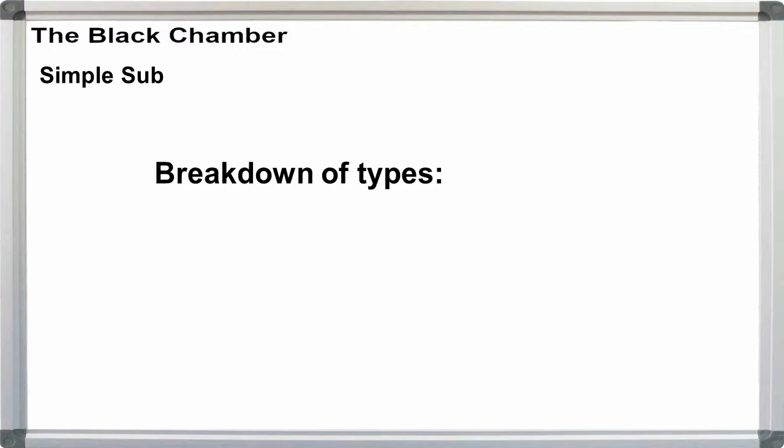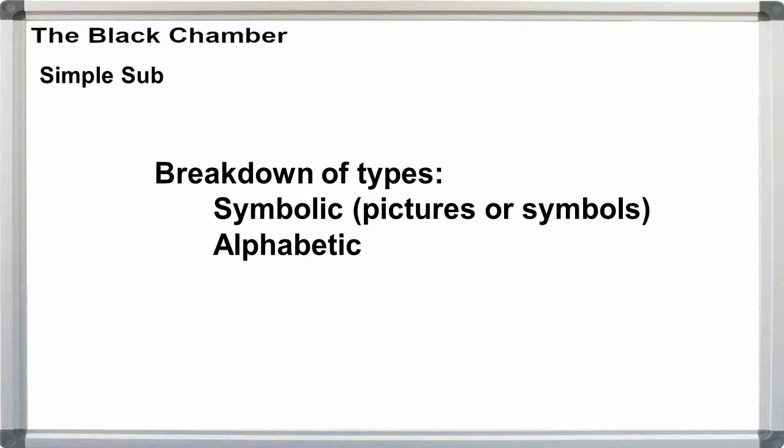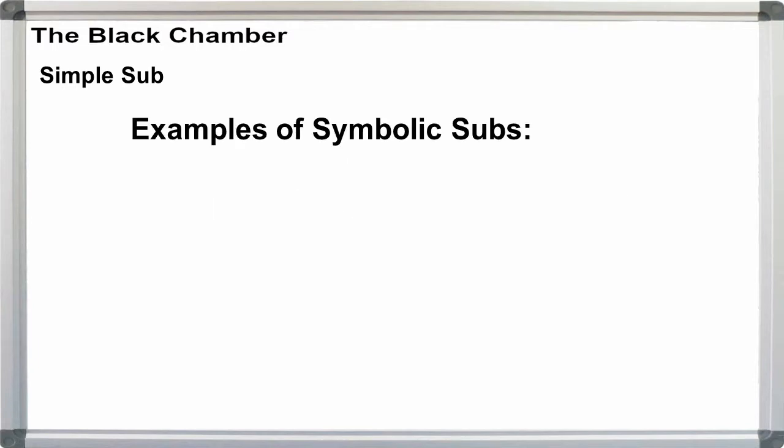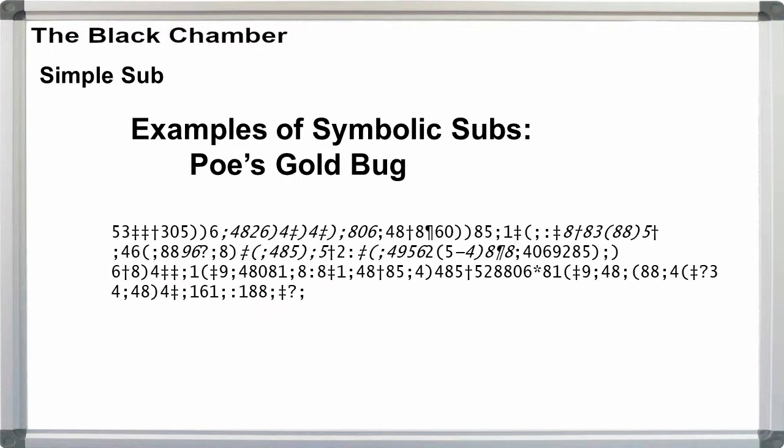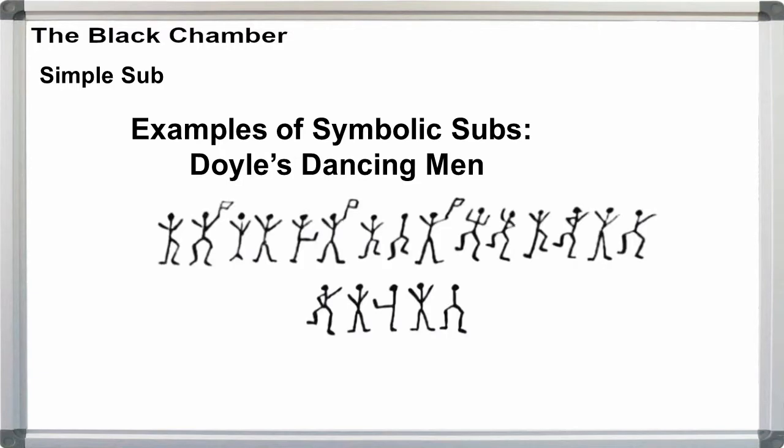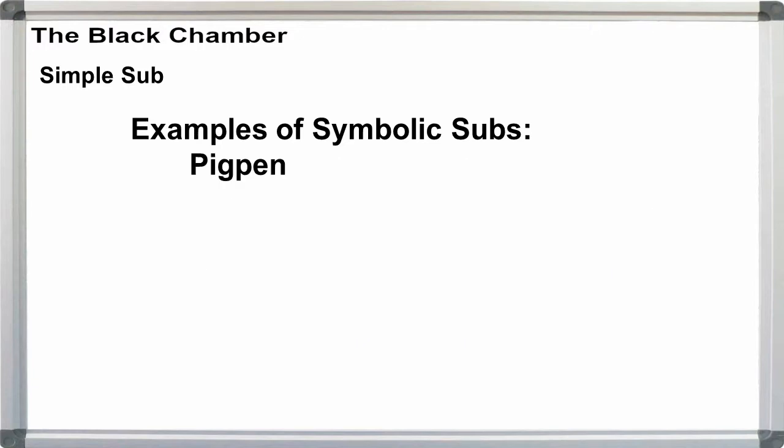As mentioned in the intro, we can treat simple substitution ciphers as symbolic, that is using pictures or symbols to represent the letters of our plain text, or alphabetic, where each letter is replaced by some other letter. Famous examples of symbolic ciphers are Poe's Goldbug, Doyle's Dancing Men and Pigpen.